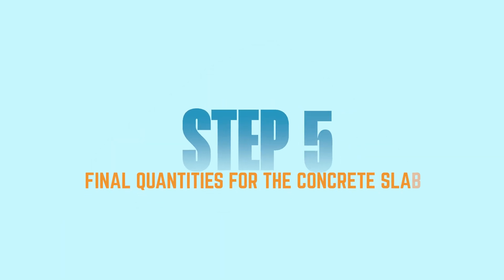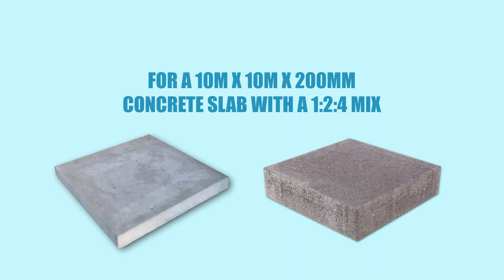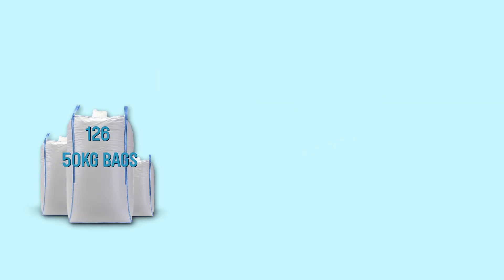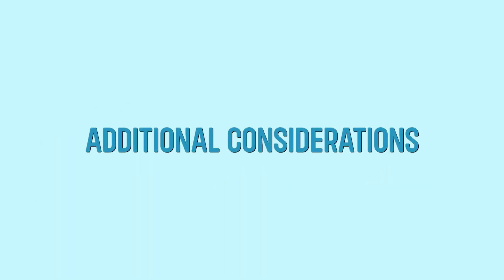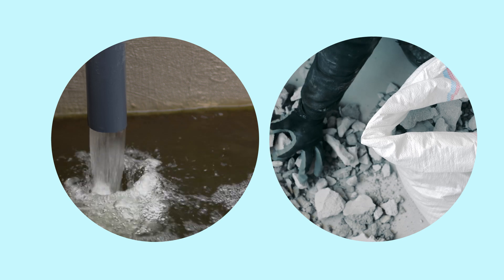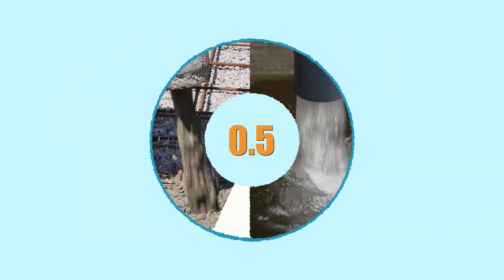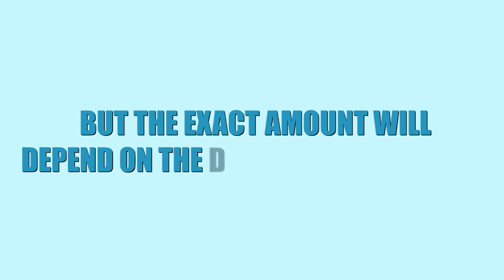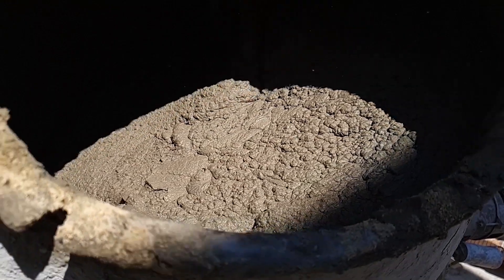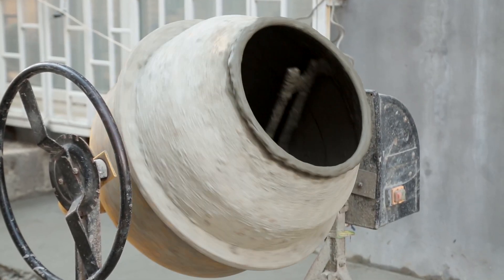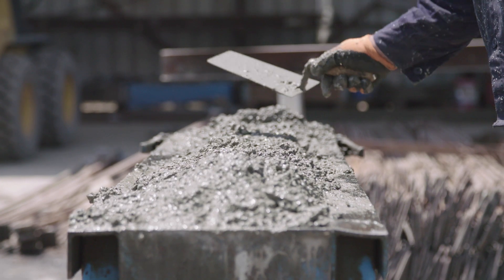Step 5: Final quantities for the concrete slab. To summarize, for a 10×10×0.2m concrete slab with a 1:2:4 mix, you'll need 126 fifty-kilogram bags (4.4 cubic meters) of cement, 8.8 cubic meters of sand, and 17.6 cubic meters of aggregate. Additional considerations: the water-cement ratio is typically around 0.5 for a mix like this, though the exact amount depends on desired workability. Always account for about 5–10% extra material to cover spillage and other losses. This method ensures correct quantities for each material, avoiding overuse or shortages, and helps achieve a strong and durable concrete slab.